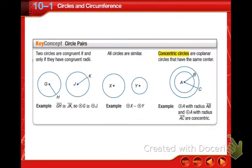Okay, so our next problem, we have circle pairs. So these are different facts about circles, basically. Two circles are congruent if and only if they have congruent radii. All circles are similar, so no matter what, it doesn't matter how big or how small a circle is, they are going to be similar. And concentric circles are coplanar circles that have the same center. So there's another vocab word if you didn't get your vocab done. So here you can see two circles, one inside the other, both with the same center. Circle A with radius AB and then circle A with radius AC are concentric.